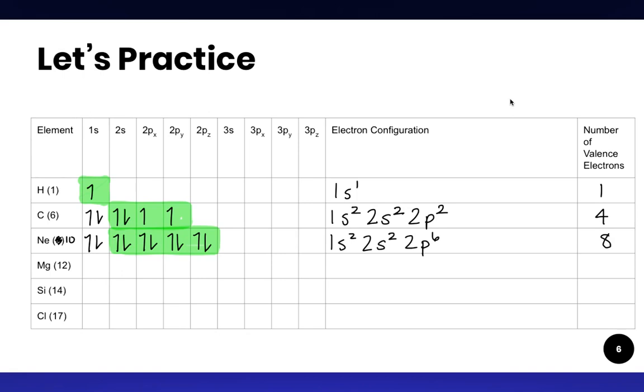Magnesium has 12 electrons. One, two, three, four, five, six, seven, eight, nine, ten, eleven, twelve. Here's our configuration. The highest main level is level three this time, and there are two electrons in that level. So there are two valence electrons.